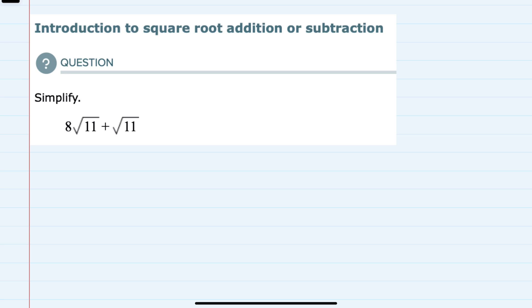and the way that we add radicals is very similar to the way that we add variable expressions. So for example, if we had instead 8 x's and then we added a single x, we know that this would be 9 x's,